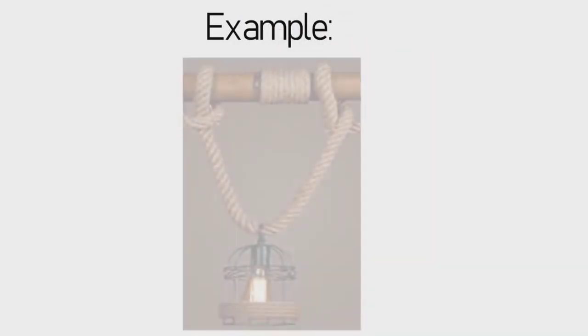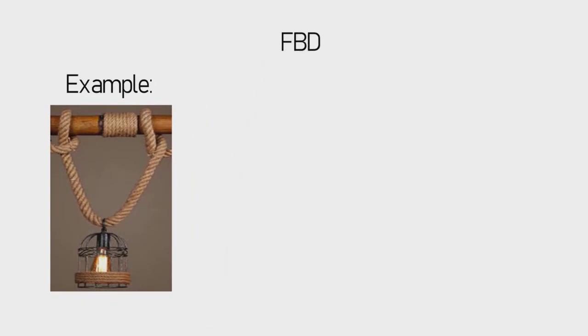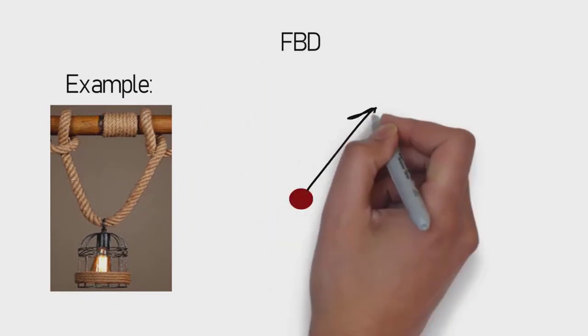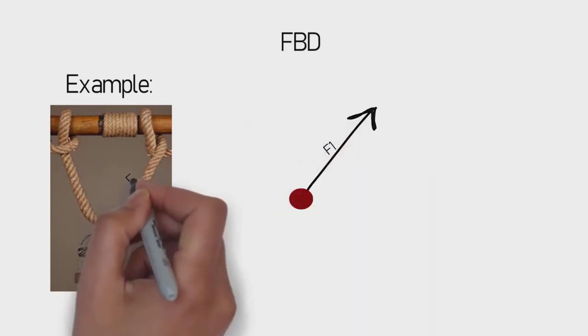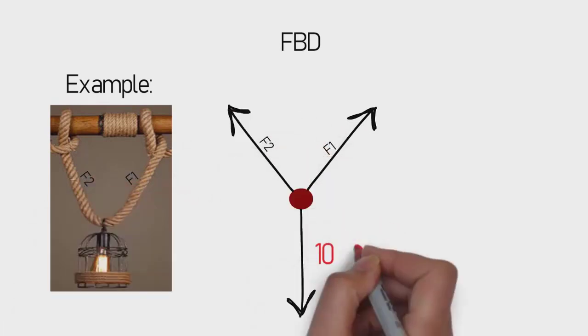Now, consider this example where a lamp is suspended from two diagonal ropes. Drawing free body diagram of it will simplify this figure. Remember, F1 and F2 are ropes that hold the lamp. We only know the self-weight of the lamp.